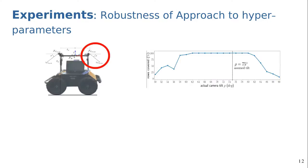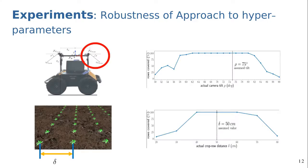We also evaluated the robustness of our navigation scheme to the critical parameters which need to be provided by the user. Both camera angle rho and crop row distance evaluation show that our approach is able to have proper performance in a variety of configurations.